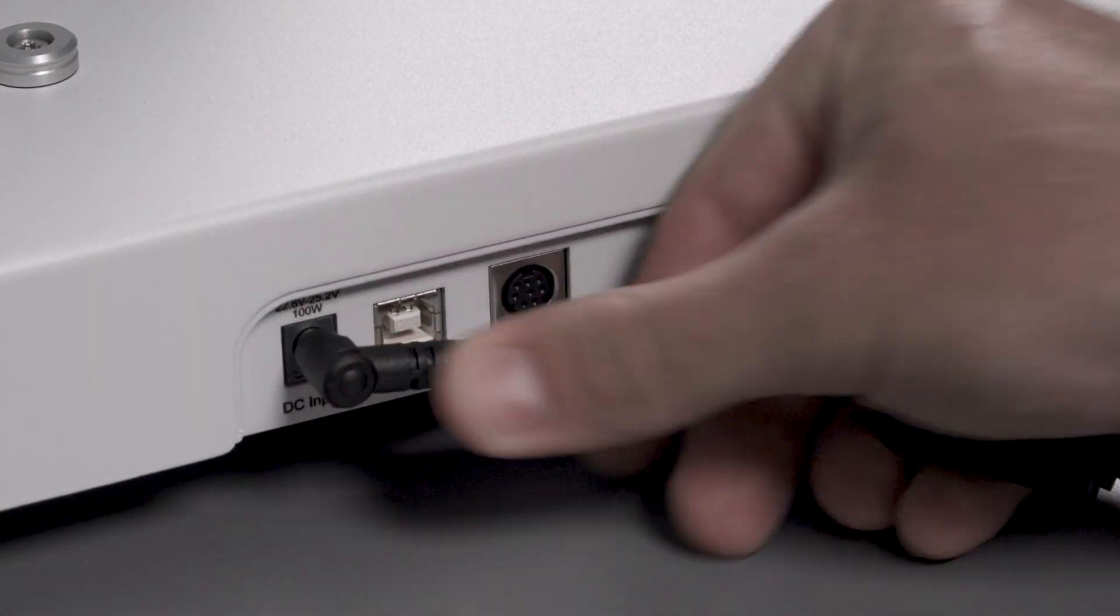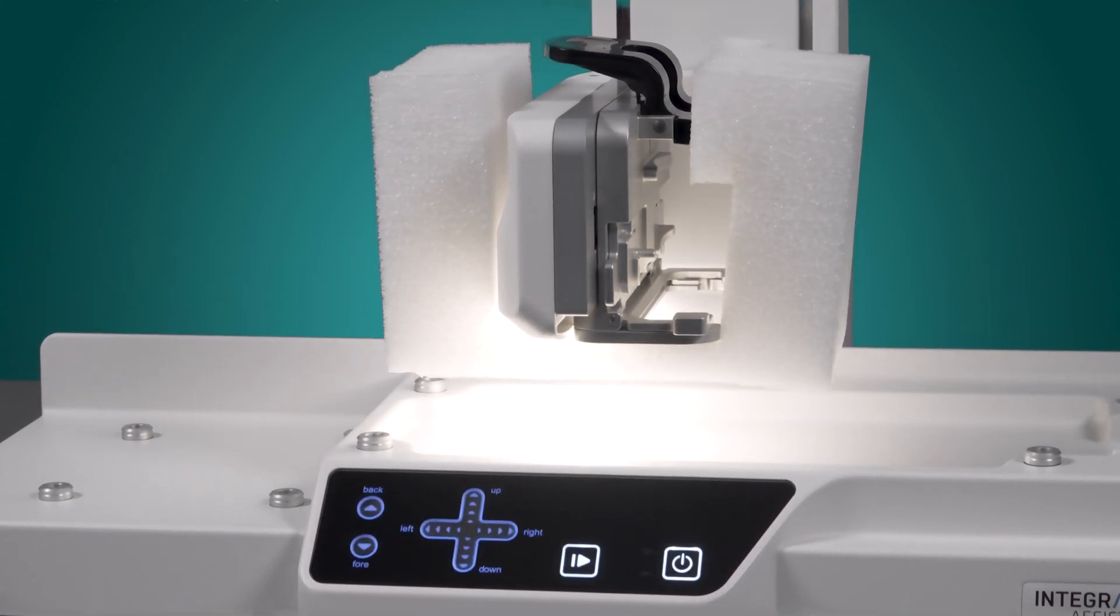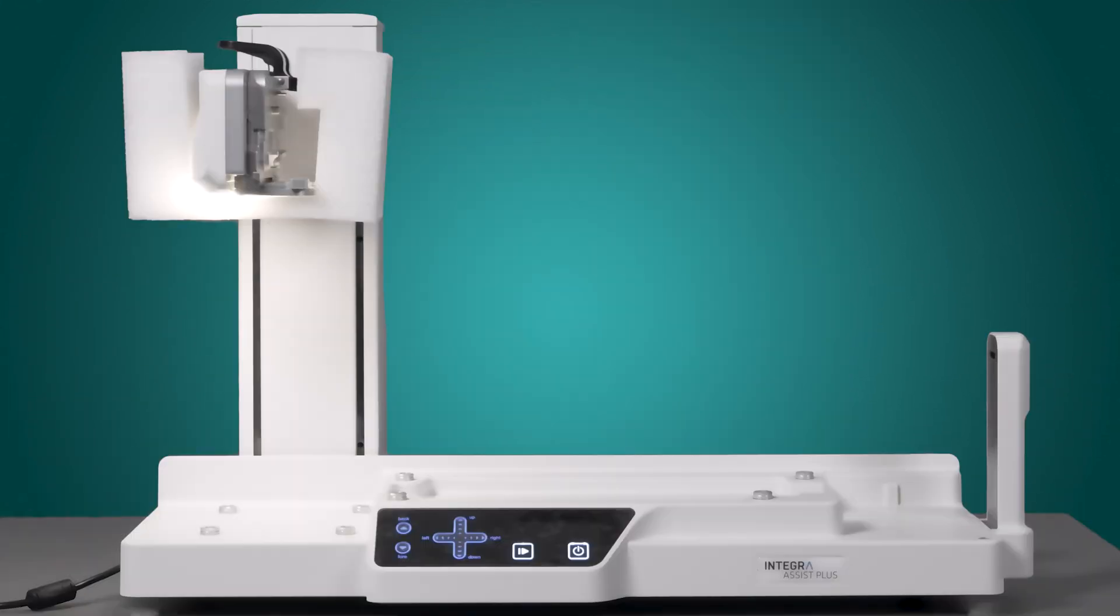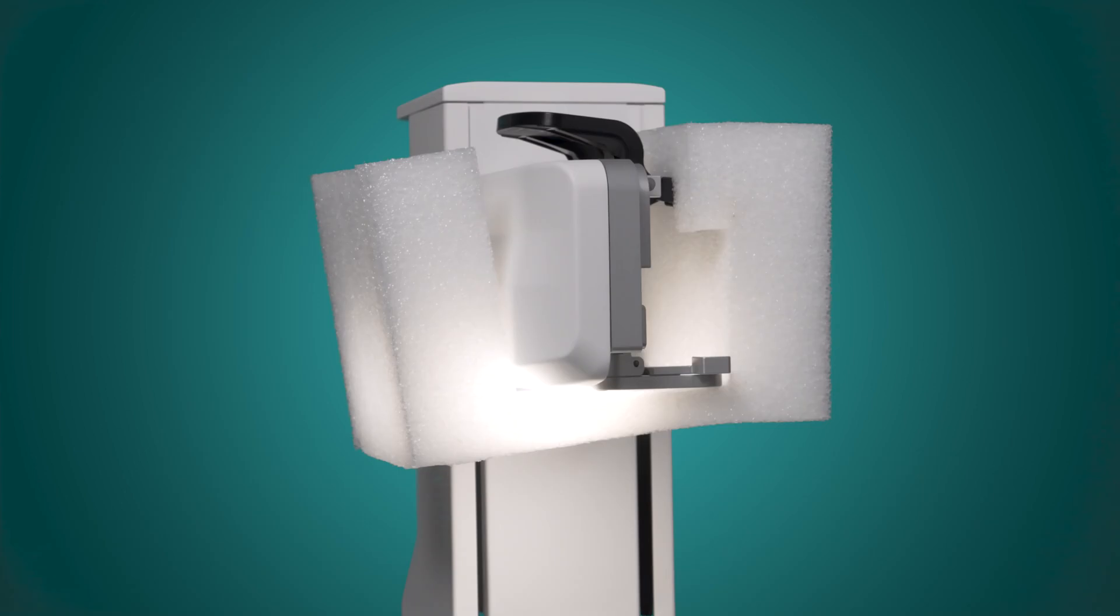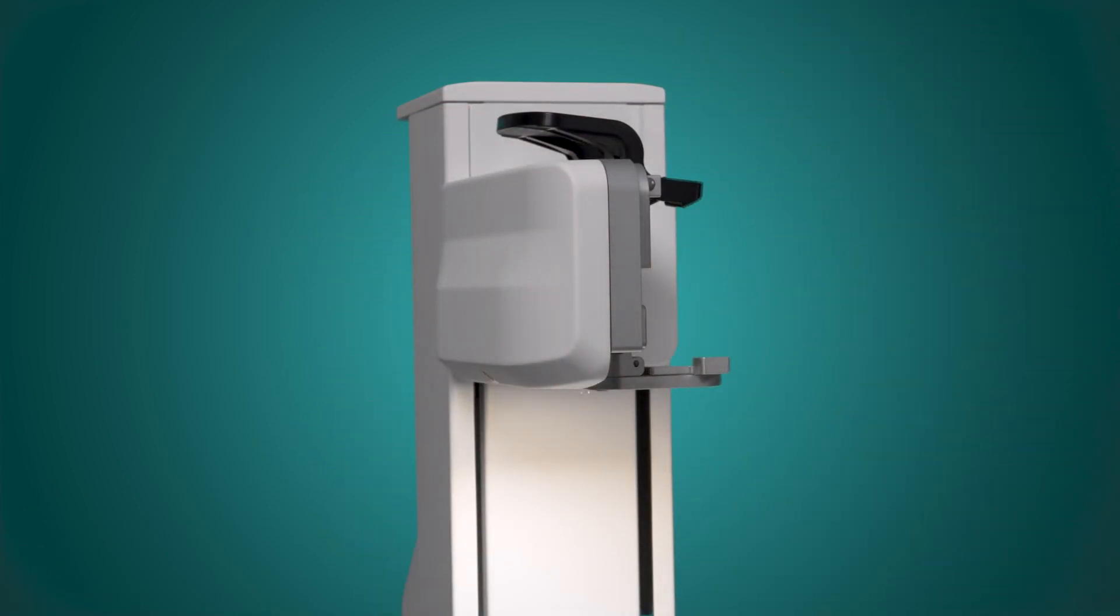Connect the power supply on the side of the instrument, switch on the device, and start the homing process. After the device is homed, remove the protection foam and the Assist Plus is ready to start.